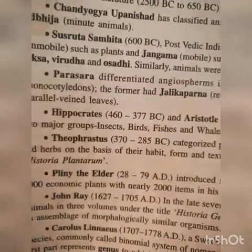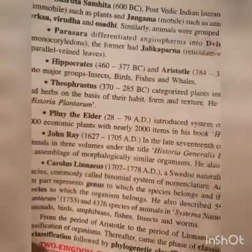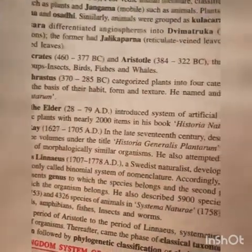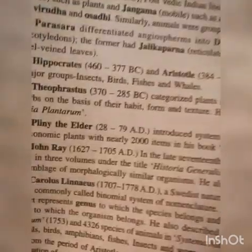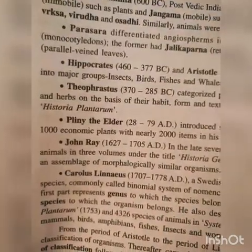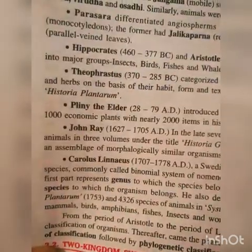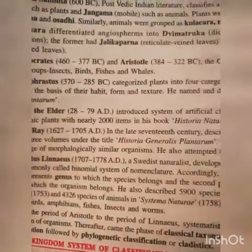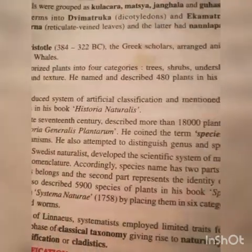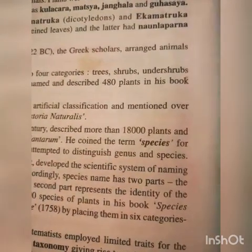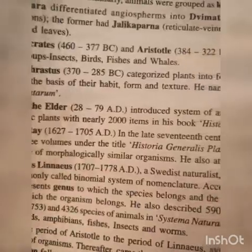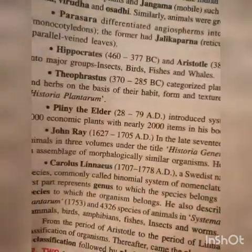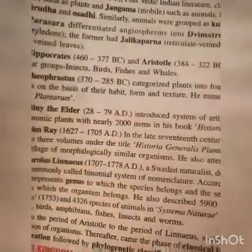Now let us see European history. Hippocrates (460–377 BC) and Aristotle (384–322 BC) — the Greek scholars arranged animals in two major groups: insects, birds, fish, and whales. Theophrastus (370–285 BC) categorized plants into four categories: trees, shrubs, undershrubs, and herbs on the basis of their habit, form, and texture. Theophrastus is the father of Botany and described 480 plants in his book Historia Plantarum.